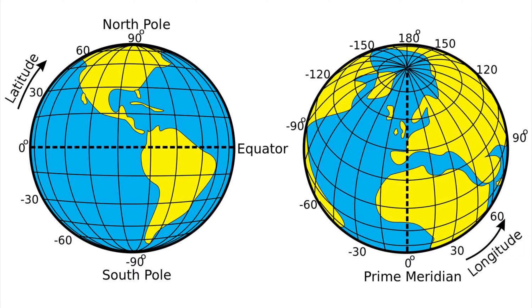The Prime Meridian might also be referred to, if you are located and live in the UK, as the Greenwich Mean Time line. This is the time zone line we use to set our phones to London time within the UK.